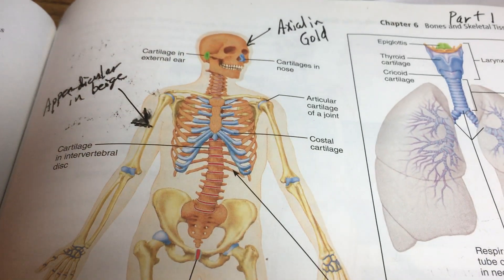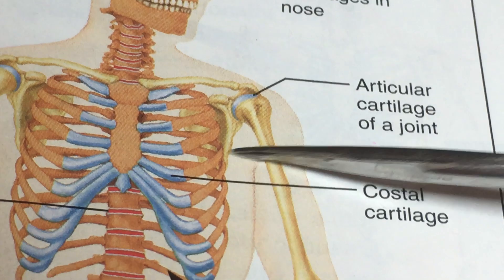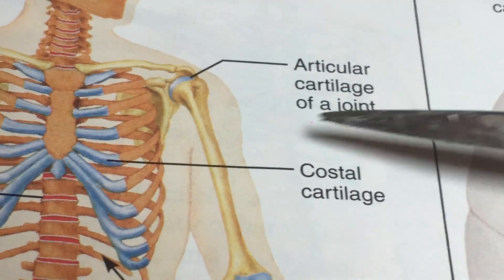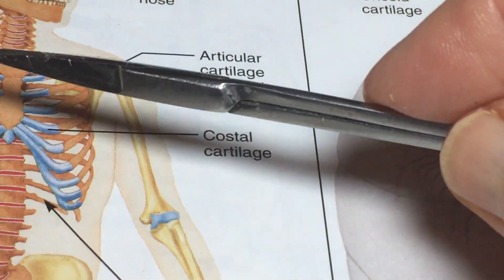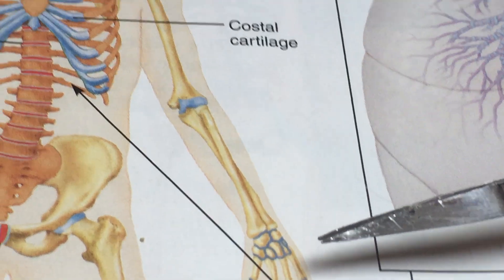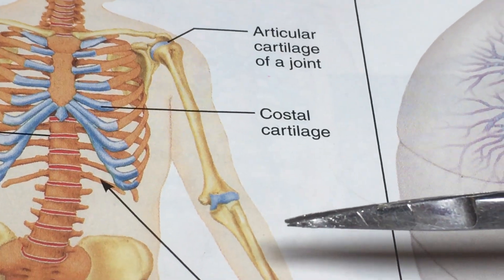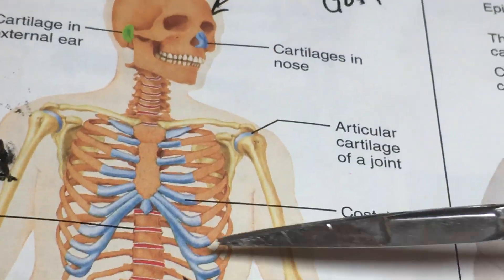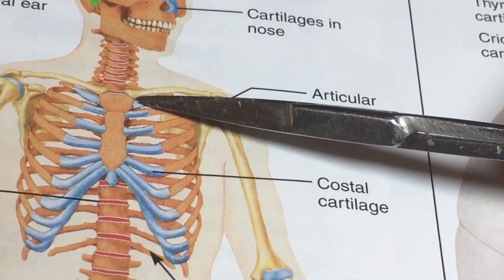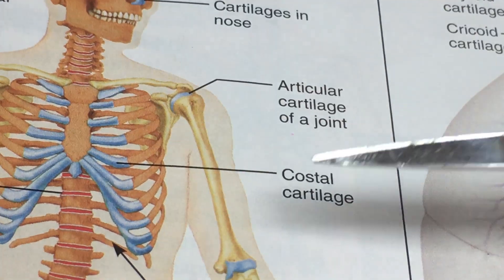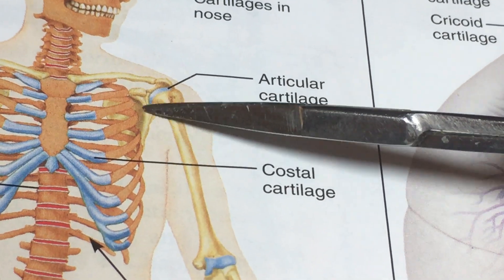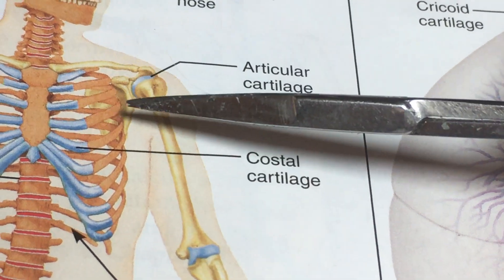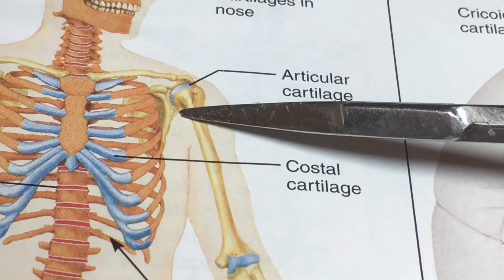If you look closely, the appendicular skeleton begins with the clavicle and the scapula. If this person were to fall and bear weight on an outstretched hand, the entire weight of the body would be featured right here at that joint. This bone — the scapula — does not have a joint with the axial skeleton; it has muscle attachments but no bony articulation, meaning no joint.